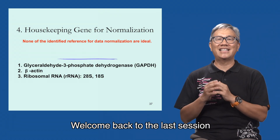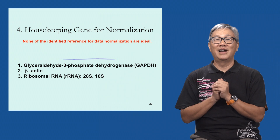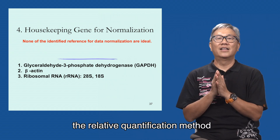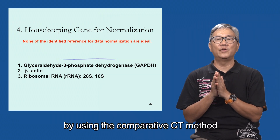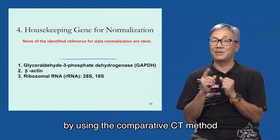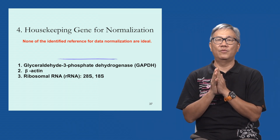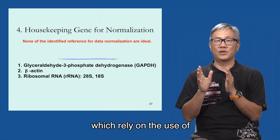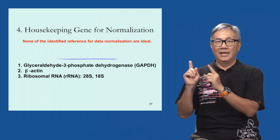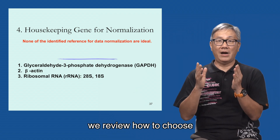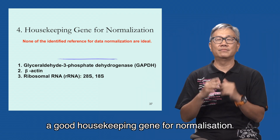Welcome back to the last section on real-time quantitative PCR. I hope you have learned the relative quantification method by using the comparative CT method, or the delta-delta CT method, which relies on the use of a stable reference gene for comparisons. In this section, we will review how to choose a good housekeeping gene for normalization.